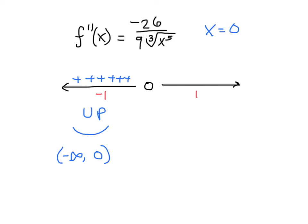When I plug a positive one in for x, I get negative 26 over nine, which is a negative value. That indicates to me that all of these second derivative signs are going to be negative for the numbers greater than zero.